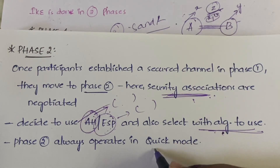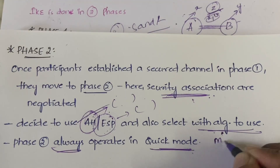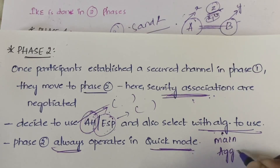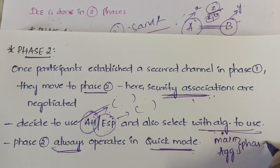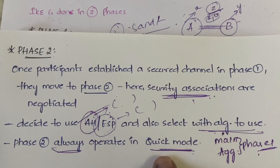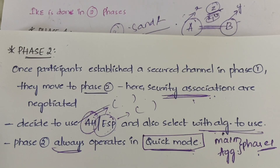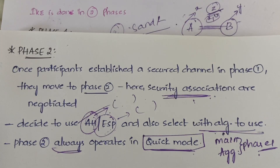Once Phase 2 is done — covering security associations, protocol selection, and related algorithms — communication can begin. Phase 2 always operates in quick mode. While Phase 1 has two modes (main mode or aggressive mode), Phase 2 must always use quick mode; there is no option. In summary: Phase 1 covers algorithm negotiation, Phase 2 covers security associations and protocol/algorithm selection.